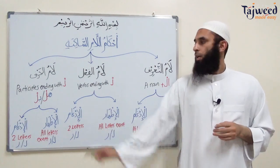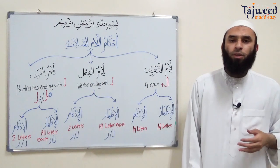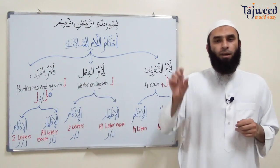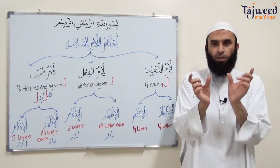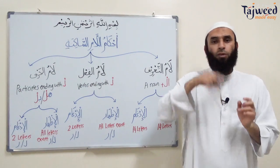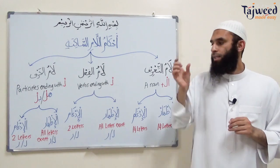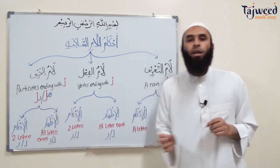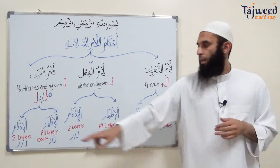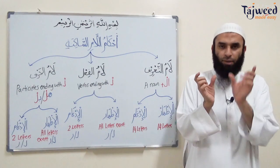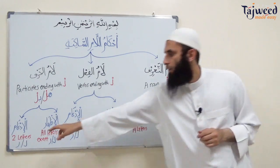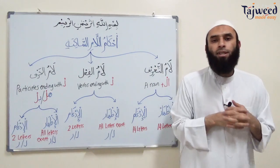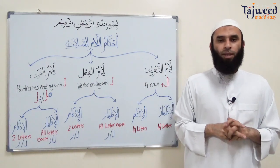For participles: there are only two participles in Arabic that end with اللام الساكنة - that's هل and بل. If هل or بل meets a following word that starts with any letter, the لام is pronounced clearly (الإظهار). But if the following word starts with لام or را, then the لام in هل or بل merges onto that word (الإدغام). Now let's look at the board for examples.